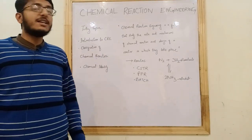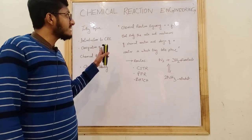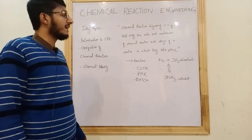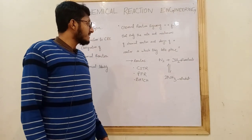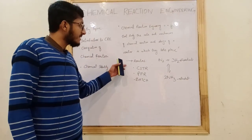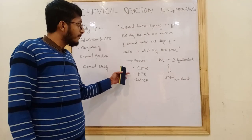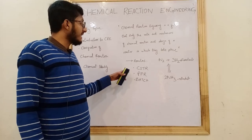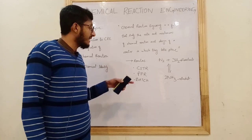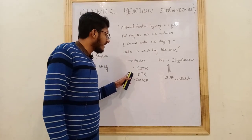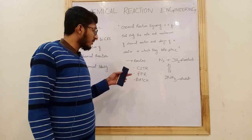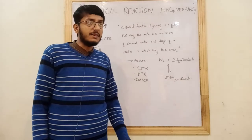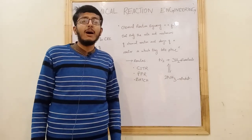Chemical reaction engineering is a field that studies the mechanism of chemical reactions and the design of reactors in which they take place. For example, common reactor types include the CSTR (continuous stirred tank reactor), PFR (plug flow reactor), and batch reactor. These reactors will be discussed in detail in upcoming lectures.